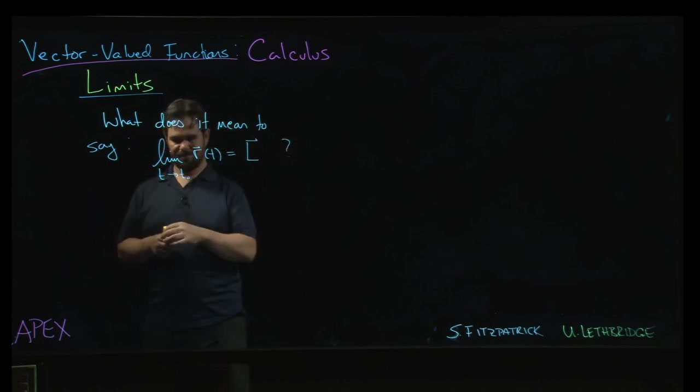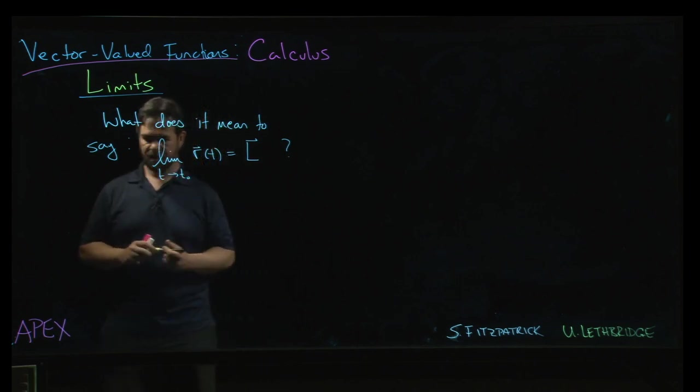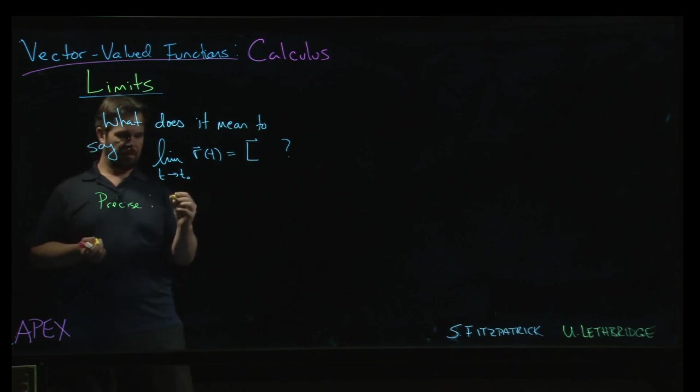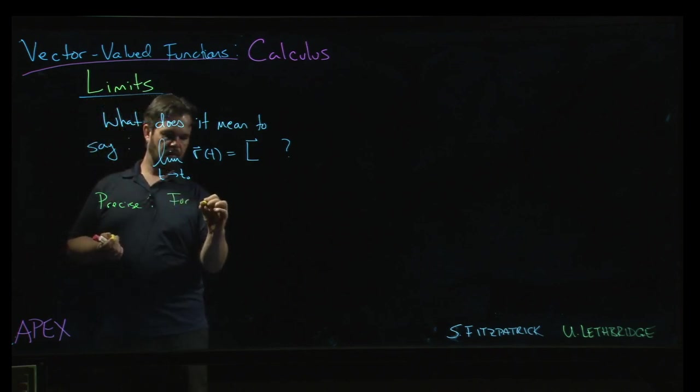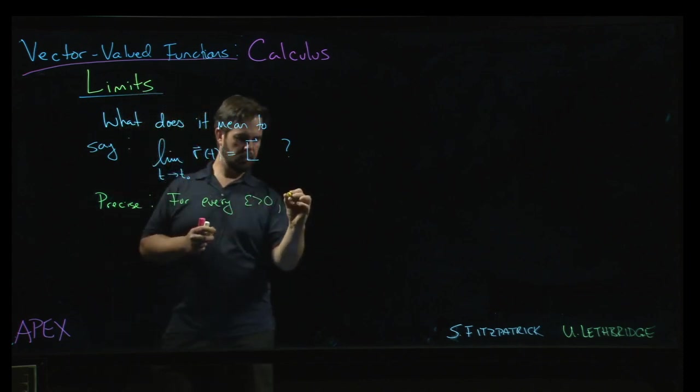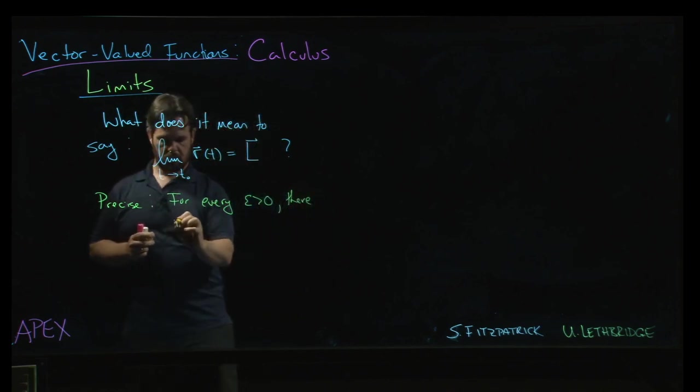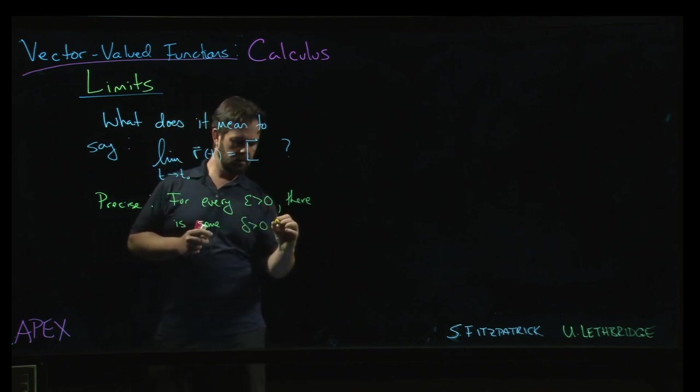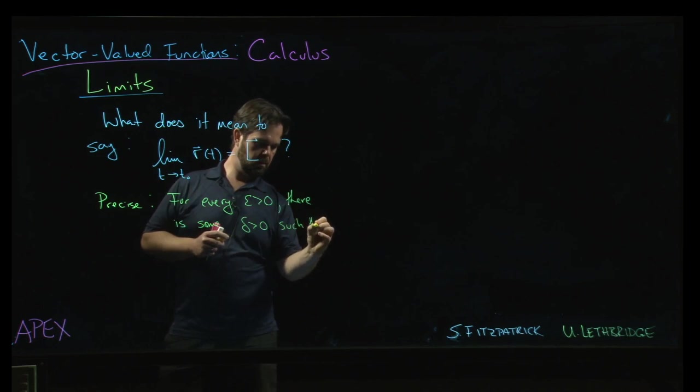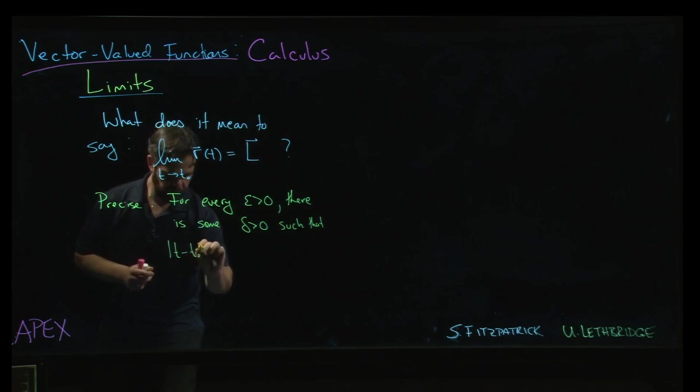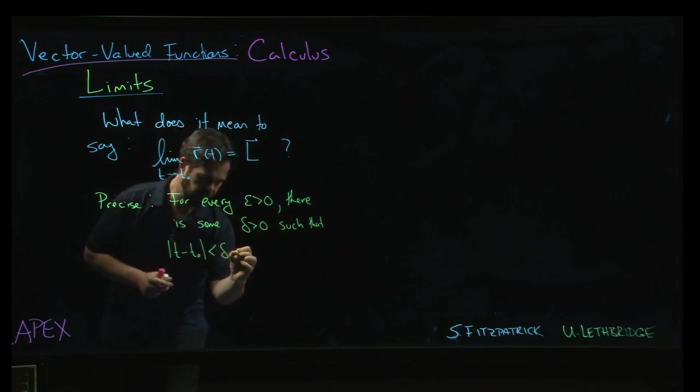Well, I guess one thing you can do is take the precise definition approach. This means for every epsilon bigger than zero, there is some delta bigger than zero, such that if the absolute value of t minus t0 is less than delta...